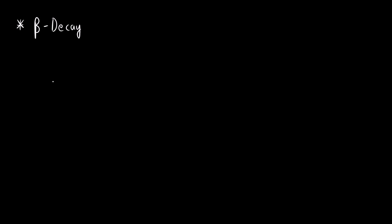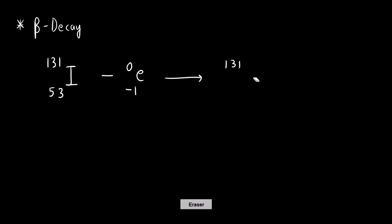Now let us see what is beta decay. Beta decay is the loss of a beta particle, which is an electron with charge minus 1 and mass 0. For example, iodine has atomic mass 131 and atomic number 53. After beta decay, 131 minus 0 is still 131, so the atomic mass number stays the same. The atomic number becomes 53 minus (minus 1), which is 54 — so we get xenon.